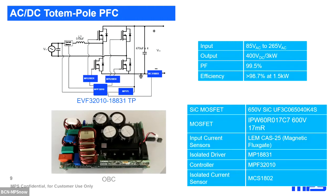The implementation has a short bill of materials using high-speed MOSFETs, and when needed, silicon carbide MOSFETs and cascodes from USCI. For the input we use a magnetic flux gate at the AC input. Then we have three MPS solutions and the dual isolated current sensor, which is the MCS1802. I will go through the specifications and main features of this later.